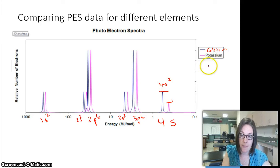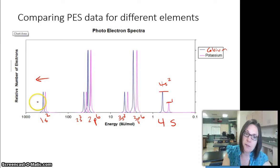Calcium has one more electron than potassium. But what you might notice is that all the peaks for calcium are shifted a little bit this way, so they actually require a little bit more energy than potassium. And the reason for that is that potassium...